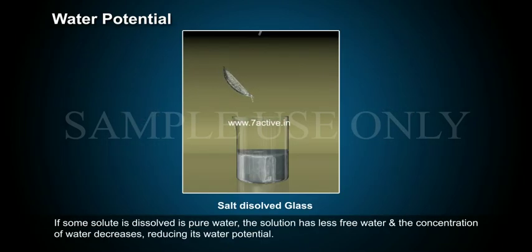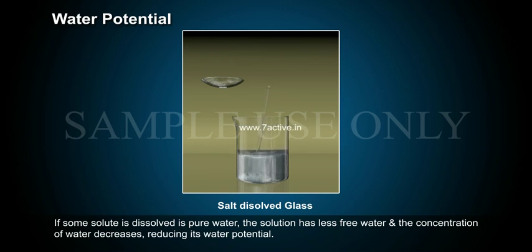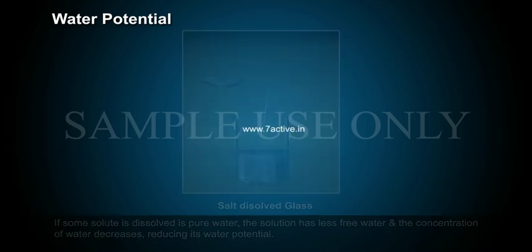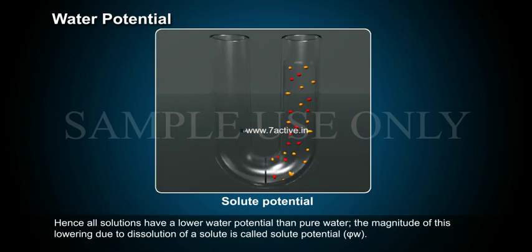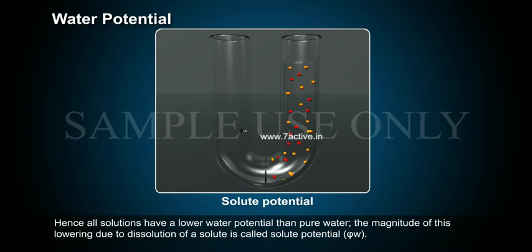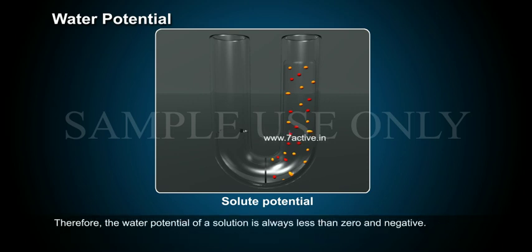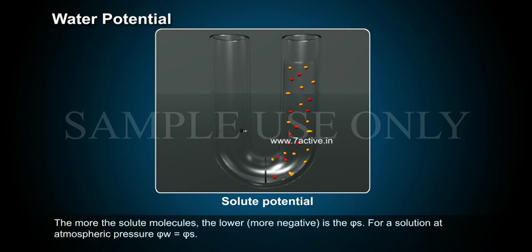When a solute is dissolved in pure water, the solution has less free water and the concentration of water decreases, reducing its water potential. Hence, all solutions have a lower water potential than pure water. The magnitude of this lowering due to dissolution of a solute is called solute potential (Psi S). Therefore, the solute potential of a solution is always less than zero and negative. The more the solute molecules, the lower (more negative) is Psi S.